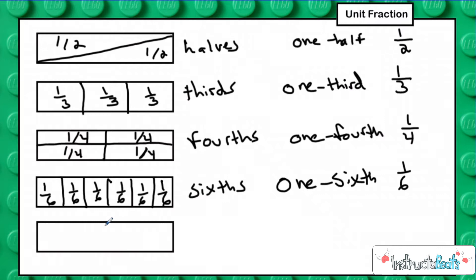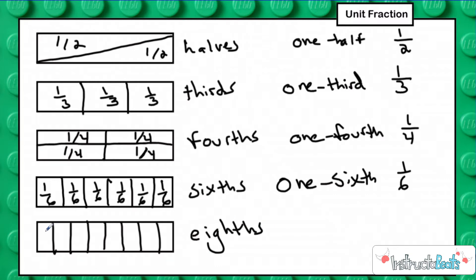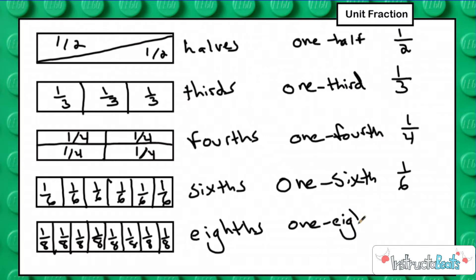The last fraction that we work with a lot is eighths. If I split this into four equal pieces and then split each of those in half, I've now made eight equal pieces, and we call that eighths. So each of these pieces is going to be worth one out of eight. Our unit fraction here is one eighth, because that's how much each of the pieces is worth. We'll write that in words — one eighth — and as a fraction: one out of eight. The bottom part of our fraction tells us how many equal parts our whole is split into, and we're talking about one of those.